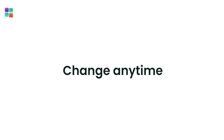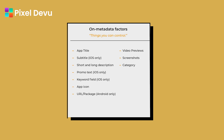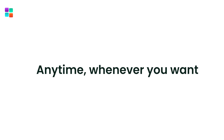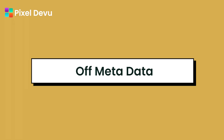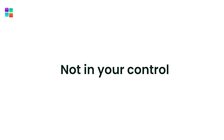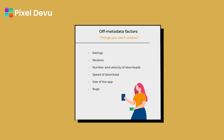What is on-metadata? These are things you can change anytime — for example, title, short description, long description, logo, screenshots, etc. Next is off-metadata: things that are not in your control, for example, install counts, ratings, and reviews. Now let's look at the practical side.